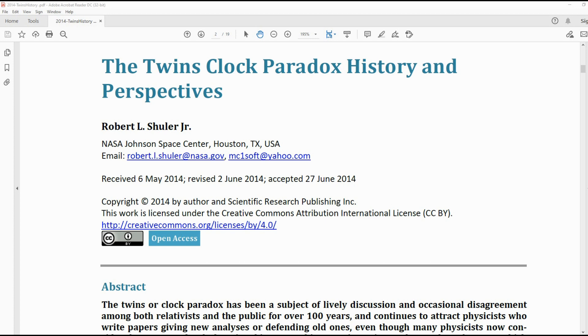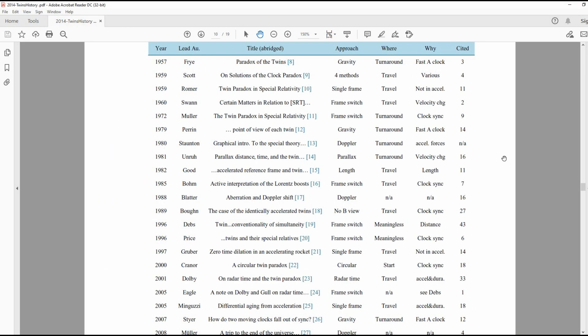But you might be thinking that the twin paradox is not a paradox at all or it's already been solved. This is just a small list of peer-reviewed journal papers by physicists trying to explain the twin's paradox. Obviously, you can see that there are different methods being used to try to explain it and the debate is still ongoing.